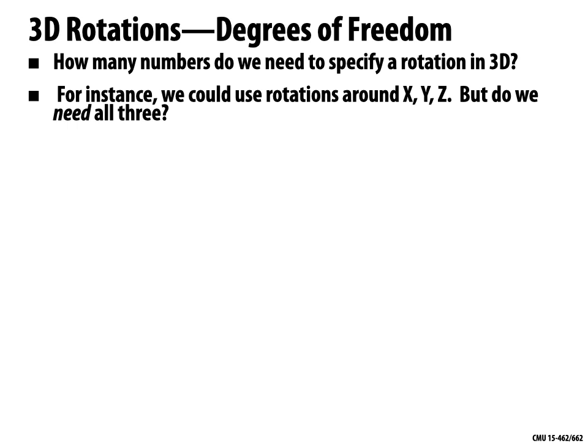Certainly you can specify rotations that way, but the question is: do you need three numbers to describe a rotation? And another question is: are those three numbers enough? Can I get all possible rotations by just specifying the x, y, and z angles? A rotation matrix is a three-by-three matrix — it has nine entries. So are we sure that three angles of rotation are enough?